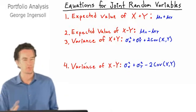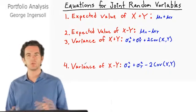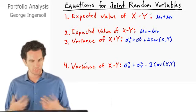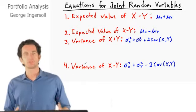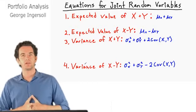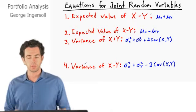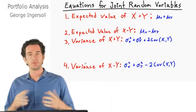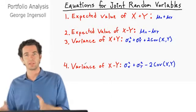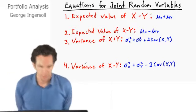This video is entitled Portfolio Analysis, but we're actually going to begin with more properties of joint random variables. I want to quickly take you through some of these equations. When we're talking about expected value of two joint random variables, the expected value of X plus Y is really just the expected value of X plus the expected value of Y, otherwise known as their averages.